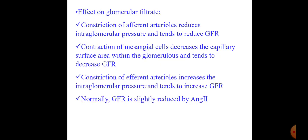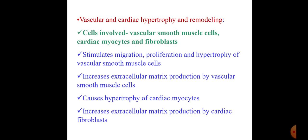Regarding the effect on glomerular filtration: constriction of afferent arterioles reduces intraglomerular pressure and tends to reduce GFR, while constriction of efferent arterioles increases intraglomerular pressure and tends to increase GFR. Normally, GFR is slightly reduced by angiotensin 2. Another effect carried out by the MAS receptor is vascular and cardiac hypertrophy and remodeling. Cells involved are vascular smooth muscle cells, cardiac myocytes, and fibroblasts. Angiotensin 2 stimulates migration, proliferation, and hypertrophy of vascular smooth muscle cells, and increases extracellular matrix production by cardiac fibroblasts.